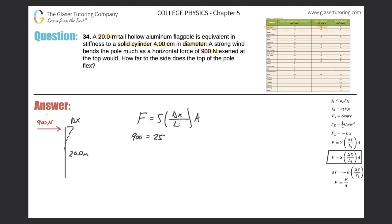So we have 25 times 10 to the 9 times the change in x, which is what we're looking for, divided by the initial length. The initial length is the overall length. They told us it's 20 meters tall. And the cross sectional area.